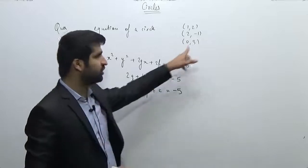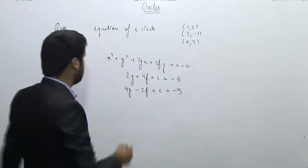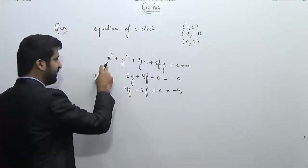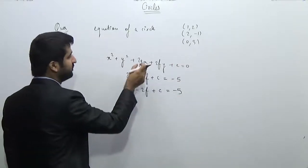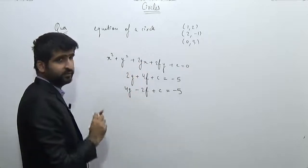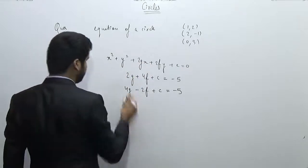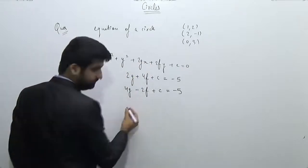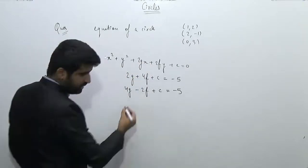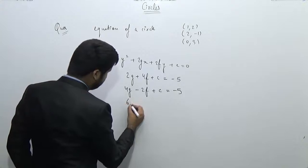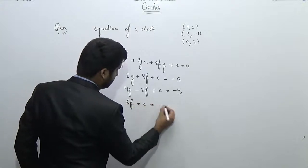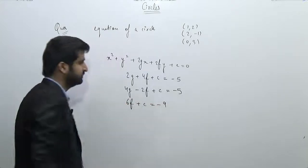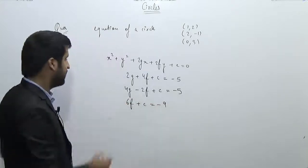And if I substitute (0, 3), the value of x is zero so there will be no coefficient of g, giving: 6f + c = -9.